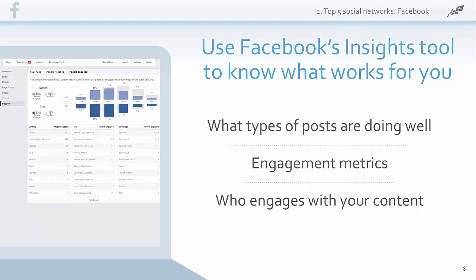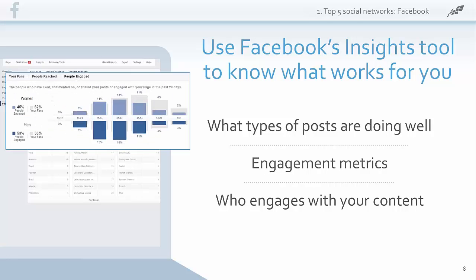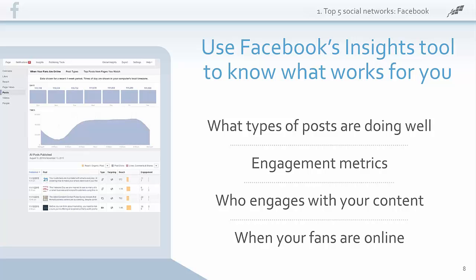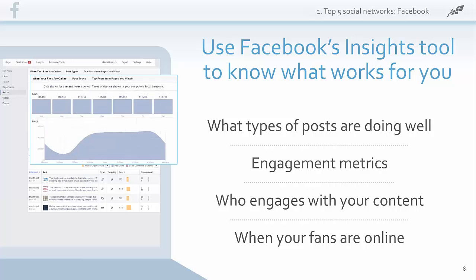You should also take a look at who is interacting with your content. Click the people tab and then the people engaged section — this tells you exactly which age groups and genders are actively engaging, as well as country, city, and preferred language. Check how this compares to the demographics of people who like your page. Is this the audience you thought you were reaching? You may need to make changes to target the right people. Facebook Insights also shows you the best day and time to post for your audience — click the post tab and then the when your fans are online section, which looks at the past seven days and shows how many of your fans are using Facebook each day and hour.